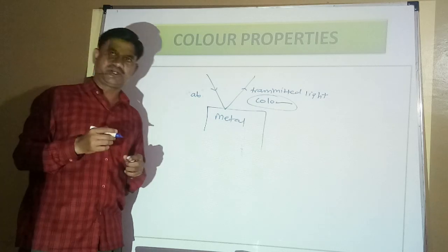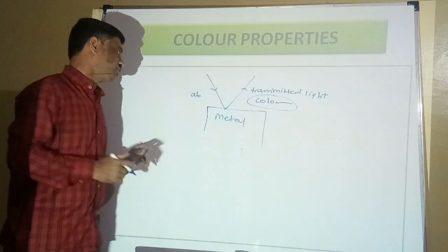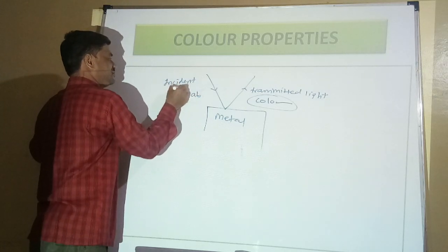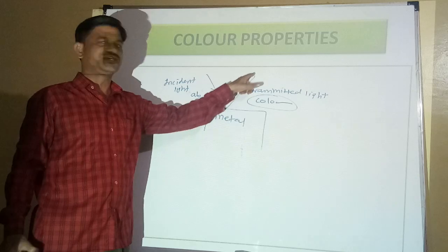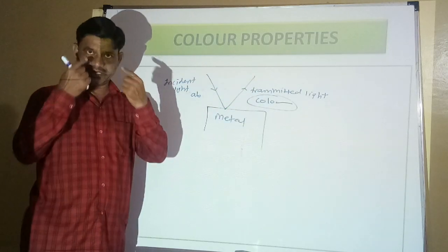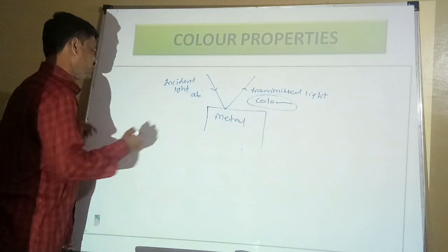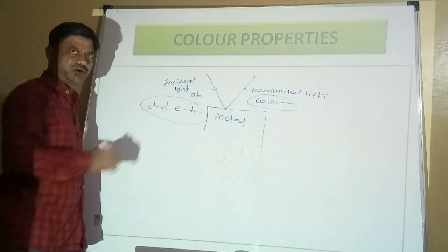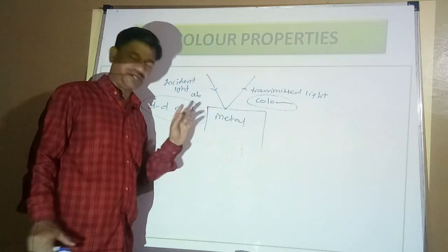Which two phenomena are responsible? Absorption and transmission of light. The metal surface is exposed to incident light; only certain radiation gets absorbed and the remaining gets transmitted. The colour of transmitted light appears to our naked eyes, and that is the colour of the D block element. For MCQ: d-d electron transition is responsible for colour properties of D block elements.